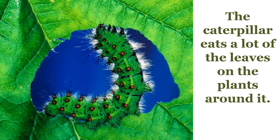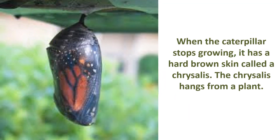The caterpillar eats a lot of the leaves on the plants around it. When the caterpillar stops growing, it has a hard brown skin called a chrysalis. The chrysalis hangs from a plant.